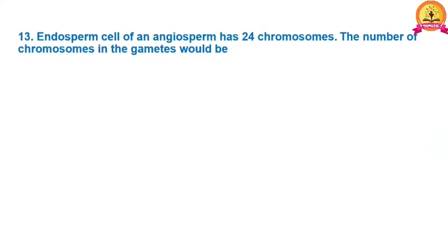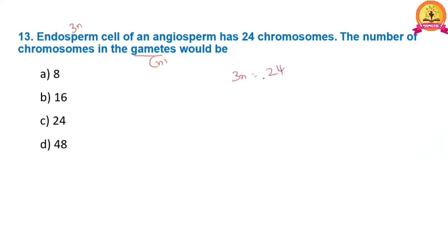Next: endosperm cell of an angiosperm has 24 chromosomes. What is the number of chromosomes in the gametes? Endosperm is a triploid tissue with ploidy 3N. Gametes are haploid (N). If 3N = 24, then N = 24 ÷ 3 = 8. Therefore, the number of chromosomes in the gametes is 8. Option A is correct.